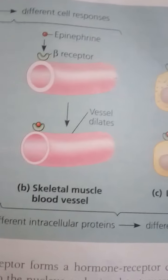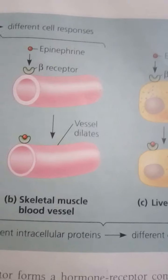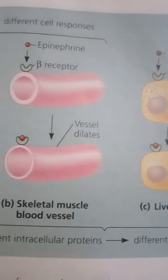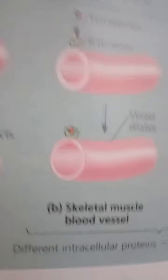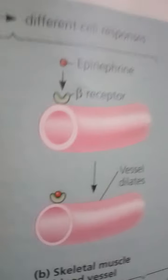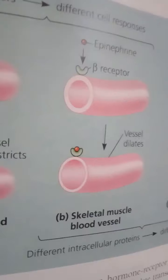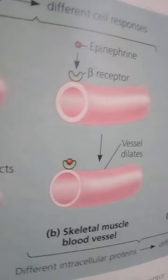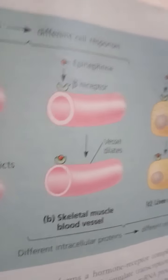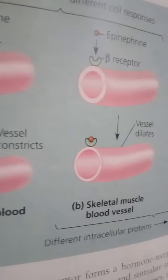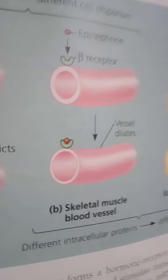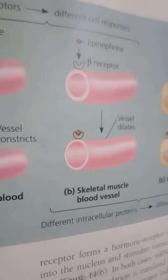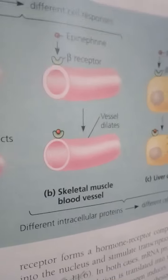Some steroid hormone receptors, however, are located in the cytoplasm when no hormone is present. Binding of a steroid hormone to its cytoplasmic receptor forms a hormone-receptor complex that can move into the nucleus and stimulate transcription of specific genes. In both cases, mRNA produced in response to hormone stimulation is translated into new protein in the cytoplasm.